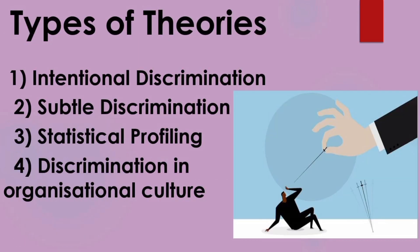The four types of theories of discrimination according to the National Research Council are: Intentional Discrimination, Settled Discrimination, Statistical Profiling, and Discriminative Practices in an Organizational Culture.